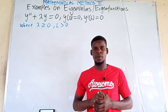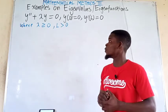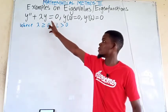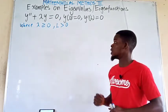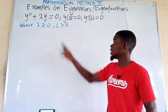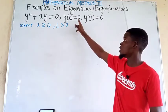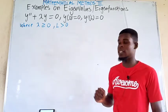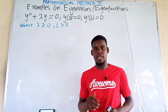Hello, welcome to my channel. In this video, we want to find the eigenvalues and the eigenfunctions of the differential equation y double prime plus lambda times y equals 0, with the boundary conditions y evaluated at 0 is 0, and y prime evaluated at l is 0, given that l is bigger than 0.